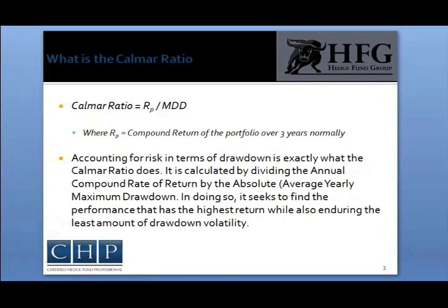The Calmar and Sterling ratios measure the efficiency of a portfolio in terms of maximum drawdown. The formula quantifies the return an investor receives in exchange for the maximum risk assumed on a trade. For evaluation purposes, a higher ratio equates to a more efficient portfolio performance.